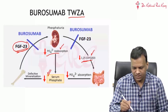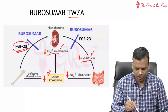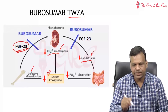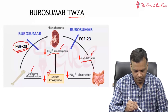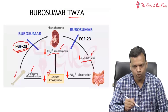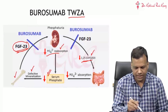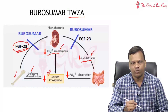When serum phosphate is less, it leads to defective mineralization. So in X-linked hypophosphatemia, the problem is defective mineralization of bone — it is a bone problem. The reason for that is overactivity of fibroblast growth factor 23.